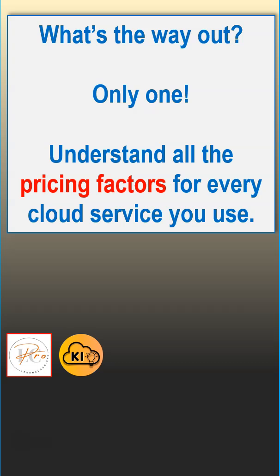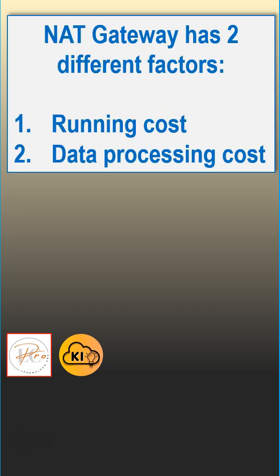For example, if you get into the details, you will understand that when you use a NAT gateway, it has two different pricing factors. One is the running cost — from the time you provision a NAT gateway, this cost keeps getting incurred. The second is the amount of data which gets processed via that NAT gateway. When you understand these pricing factors, you will accordingly design your strategy.